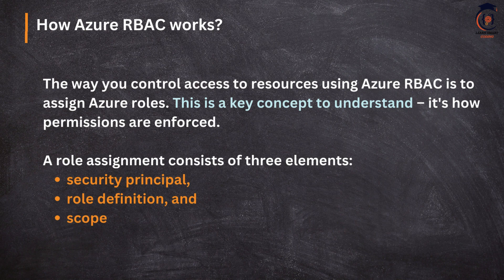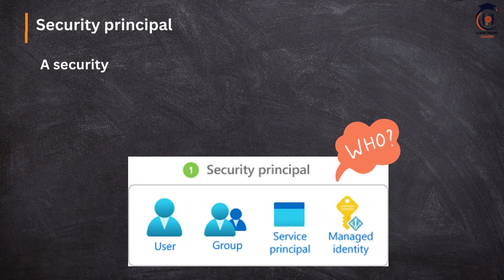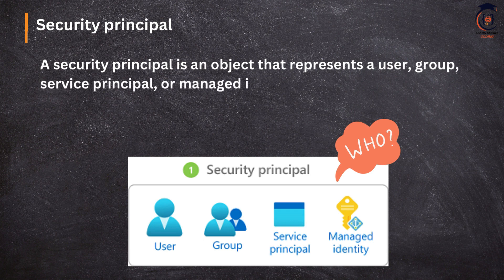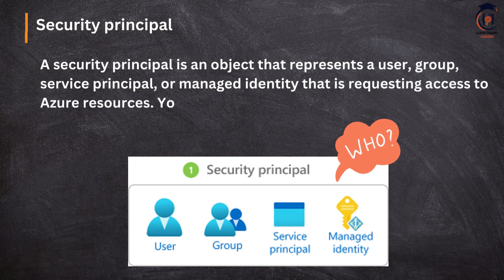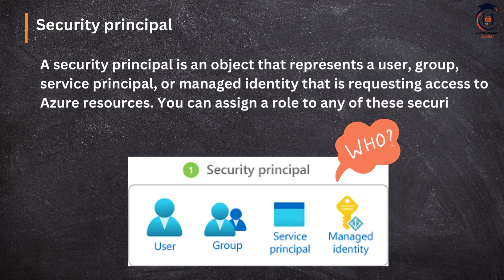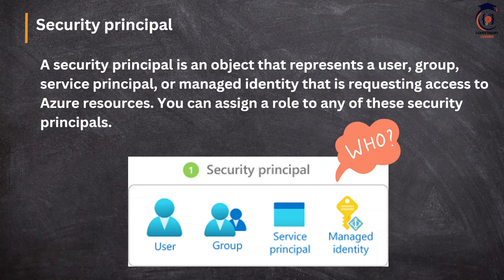The first element is the security principle — think of this as 'who.' A security principle can be of four types: a user, a group in which users reside, a service principle, and a managed identity. In simplest terms: a user is like us; a group is a collection of users; a service principle is a new identity managed by Azure for accessing resources; and managed identity is something we create and manage — it is also a representation for accessing a resource. This is called the security principle — remember it as 'who.'